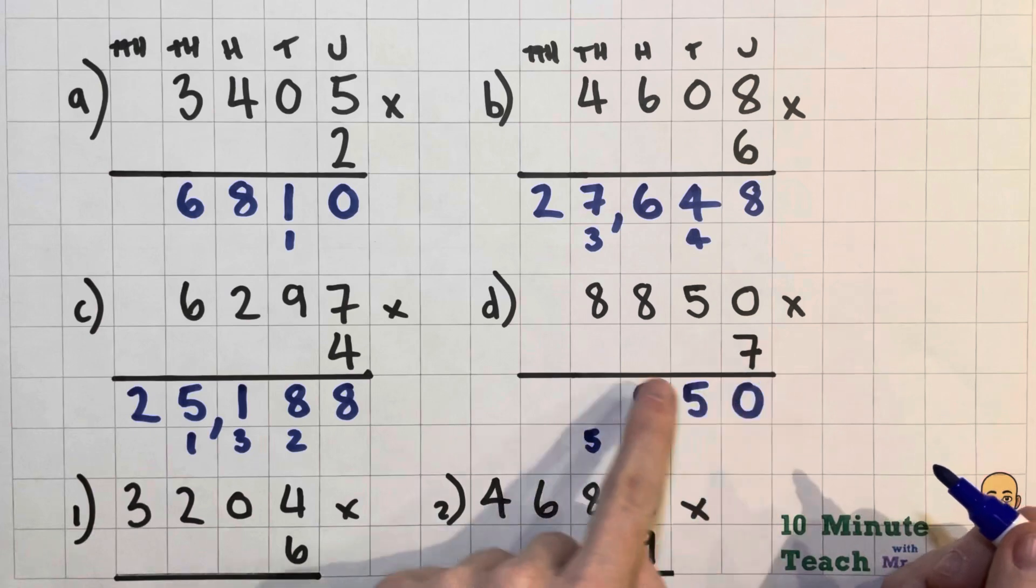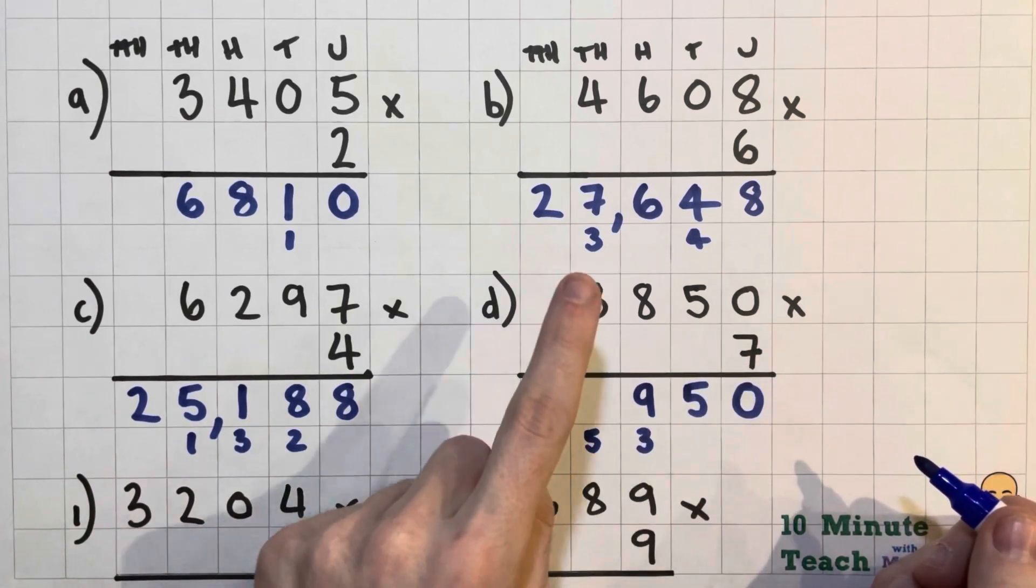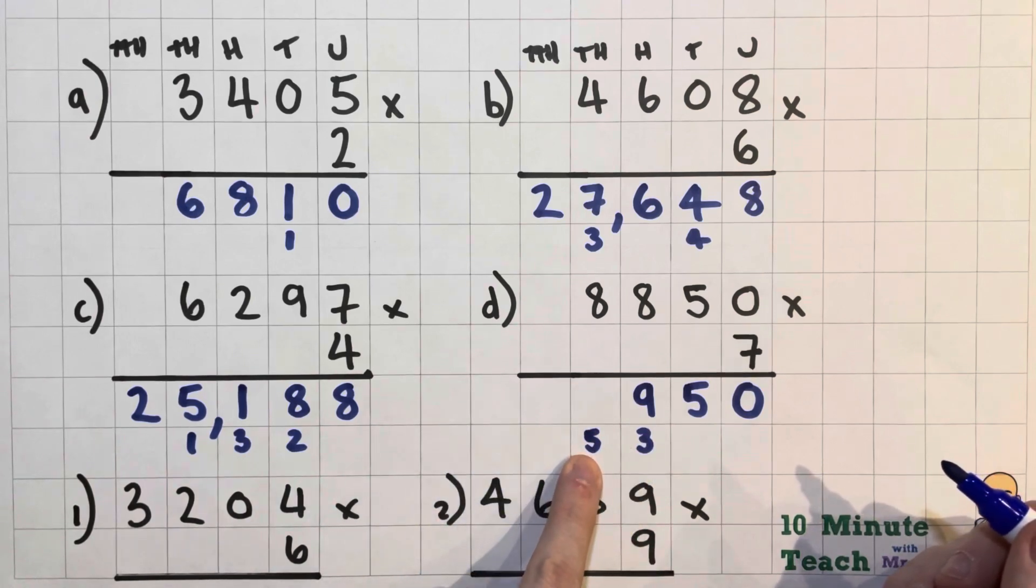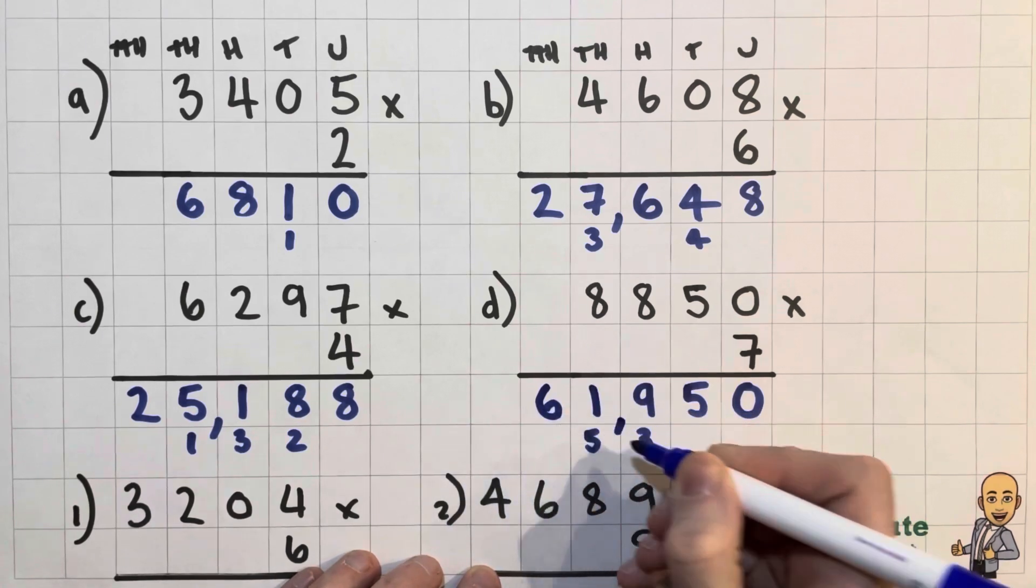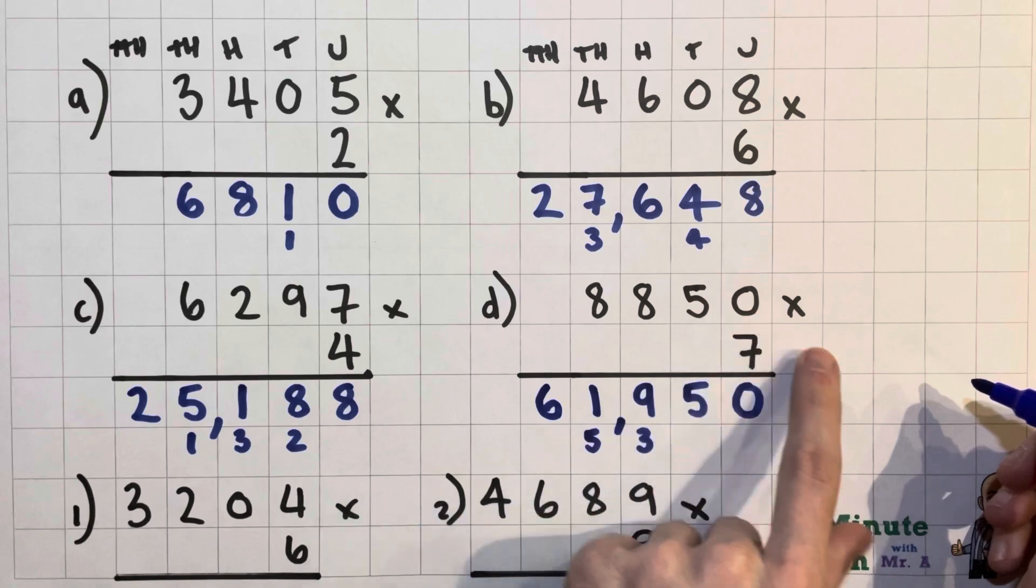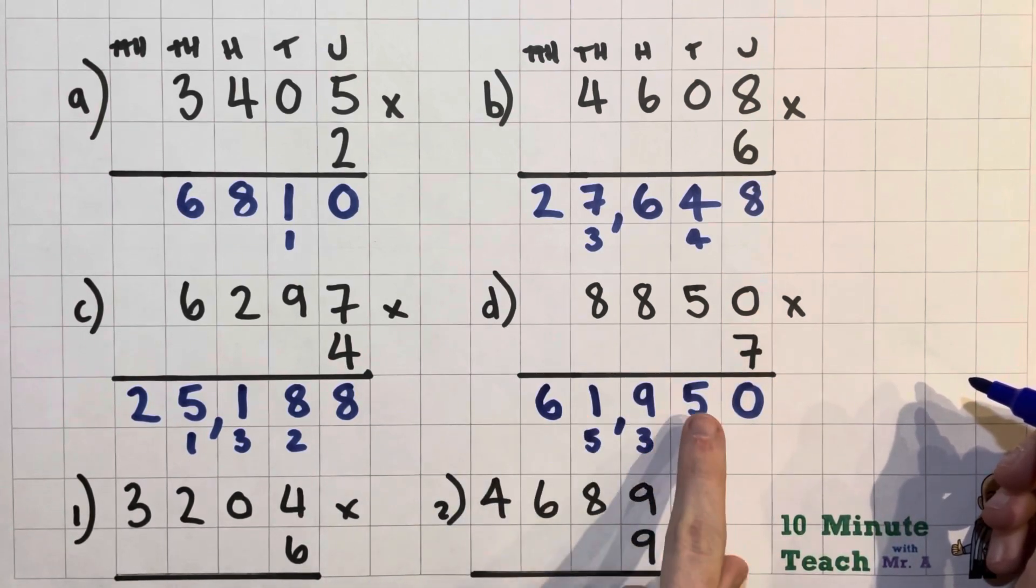And again, I've got 8 times 7, which we already know is 56. But actually because that's 8000 times 7, it'll be 56,000. But I've got to add another 5000, so that will be 61,000, really big numbers now. So the answer to 8850 multiplied by 7 is 61,950.